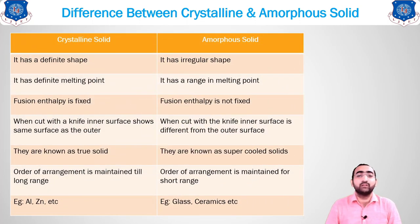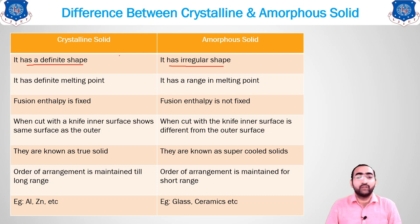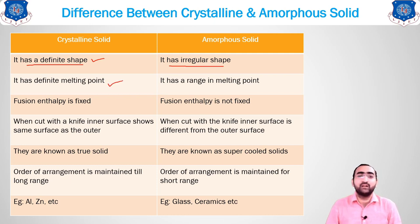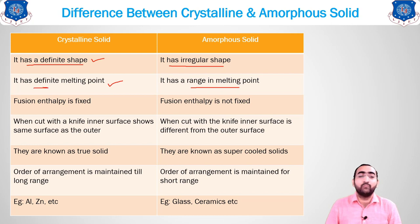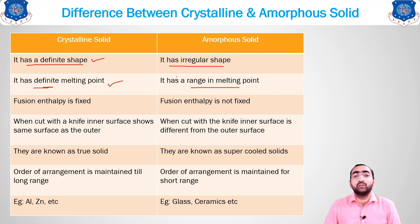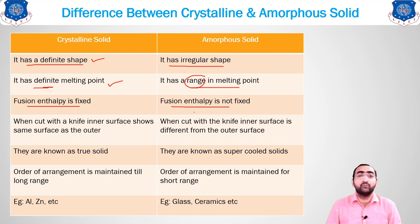Let us discuss the differences between crystalline and amorphous solids. Crystalline solids have a definite shape due to a perfect arrangement of atoms, while amorphous solids have an irregular shape due to random arrangement. Crystalline solids have a definite melting point — for example, iron melts at 1539°C — whereas amorphous solids like glass have a range of melting temperatures. Fusion enthalpy is fixed in crystalline solids but variable in amorphous solids.